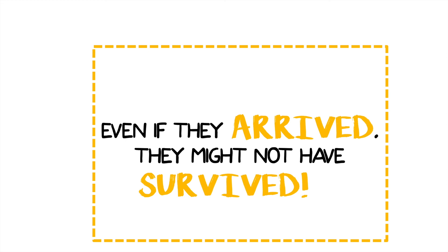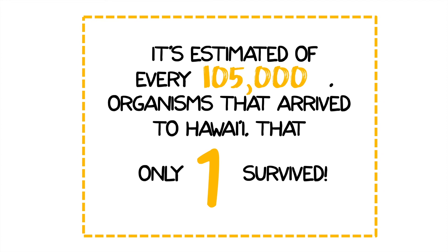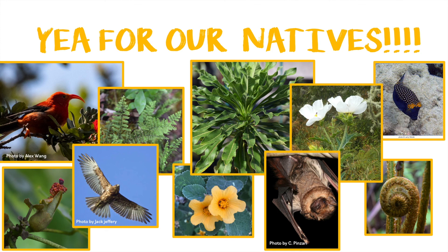The last thing to leave you with is that even if these species arrived to Hawai'i, they might not have survived. It's estimated that of every 105,000 organisms that arrived, only one survived — that's like planting over a hundred thousand seeds and having only one plant grow. So here's to our natives for crossing thousands of miles of ocean and surviving against the odds. Here are just a few of the amazing plants and animals native to Hawai'i — each one makes Hawai'i so special. That's why it's our job to learn more about them and ensure they survive for generations to come. I hope this video sparked some curiosity about our native species and how they got here. A hui hou!